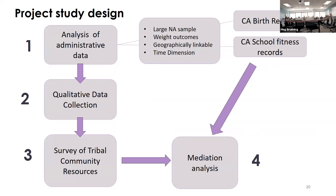For the project study design, I found a unique data source at the California Department of Education, which had been collecting kids' BMI through physical fitness testing since the year 2000 on every fifth, seventh, and ninth grader in public and charter schools. I then limited my data search to California because it has 106 different tribes spread throughout the state — rural and near urban centers — some with casinos and some without. I also realized I could use birth records to look at obesity risk at a different life stage to triangulate findings.